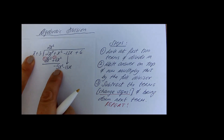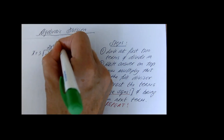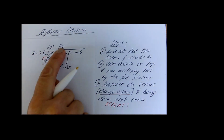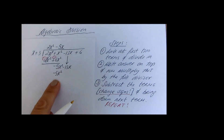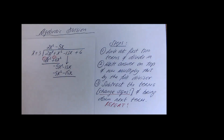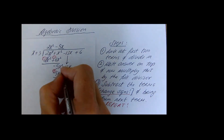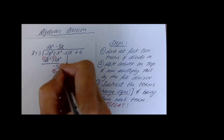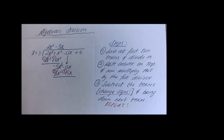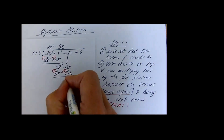Repeat: look at x and minus 5x squared. What would you multiply by x to get minus 5x squared? The answer is minus 5x. Multiply: minus 5x times x is minus 5x squared, and minus 5x times positive 3 is minus 15x. Subtract — change the signs. Minus 5x squared cancels, and minus 13x plus 15x gives positive 2x.